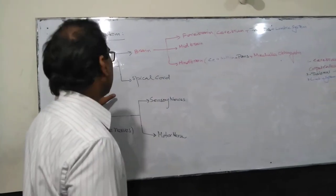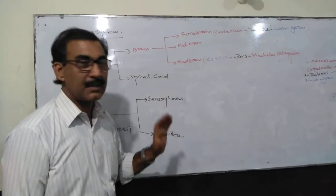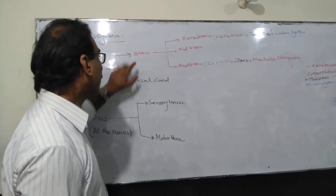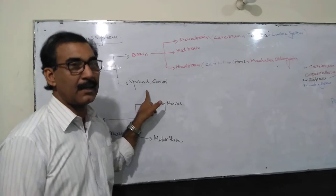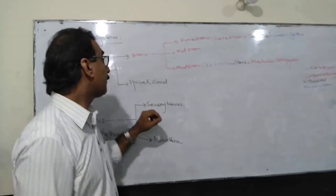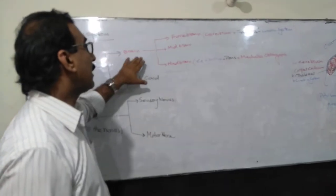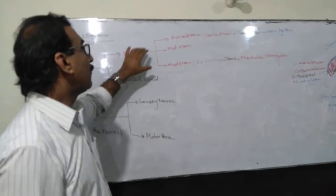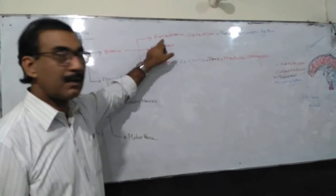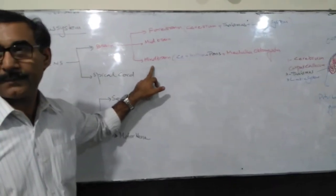The CNS, or Central Nervous System, consists of two major parts: the brain and the spinal cord. The brain consists of further three parts: the forebrain, midbrain, and hindbrain.